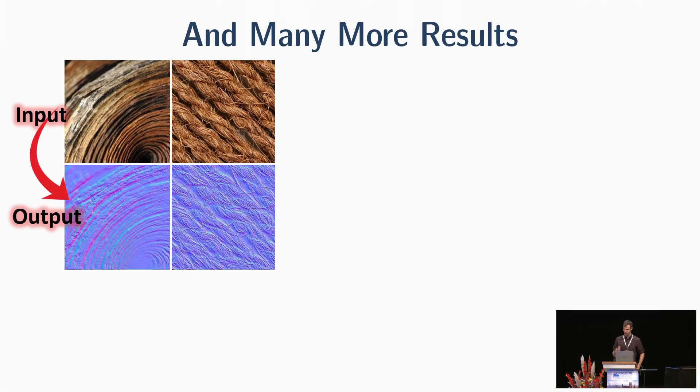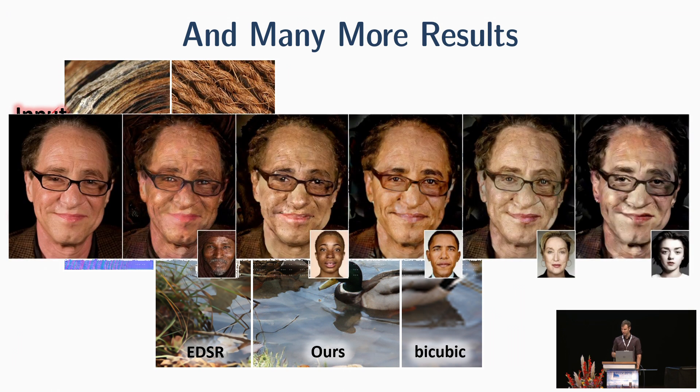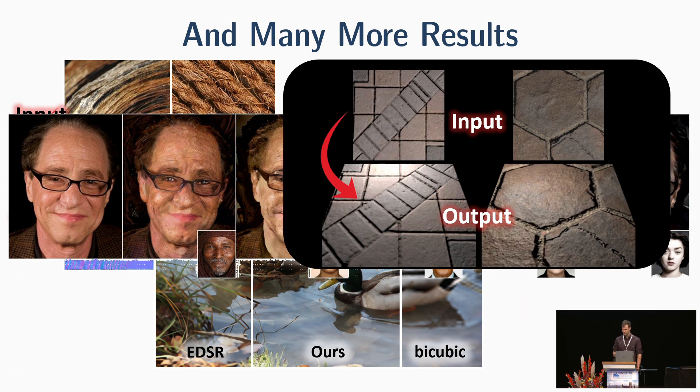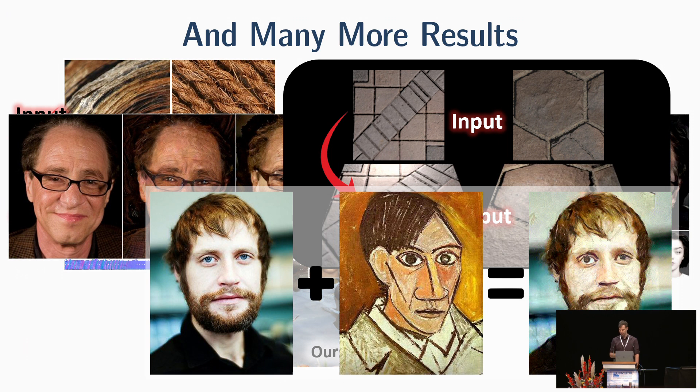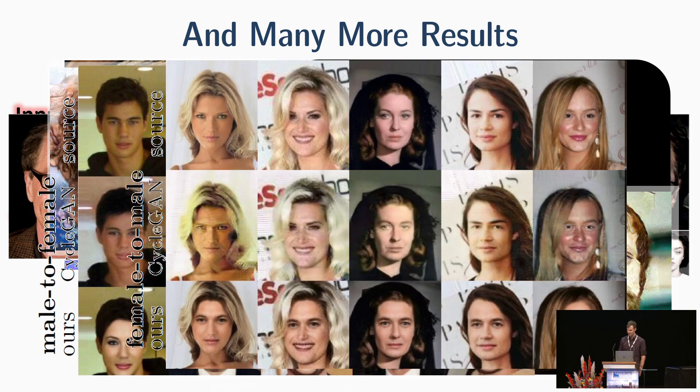And I will finish with some more results. We also have a normal estimation. This is an additional super resolution result. Style transfer with different style images. Normal estimation rendering. And more style results.